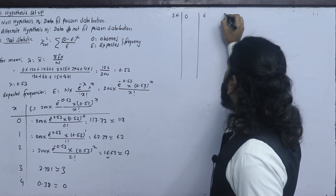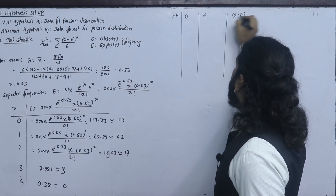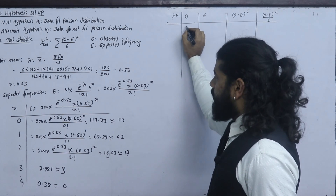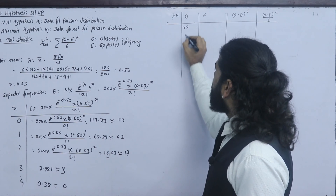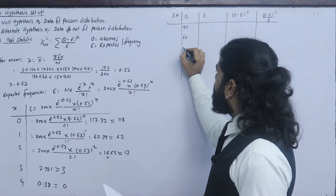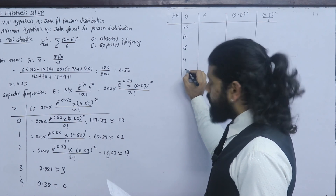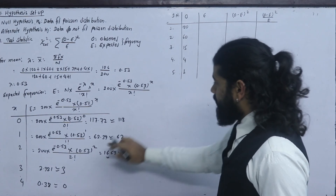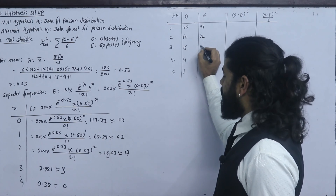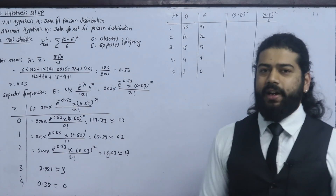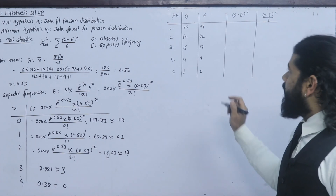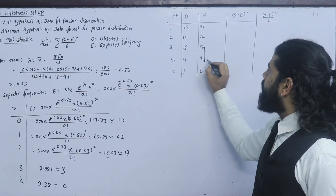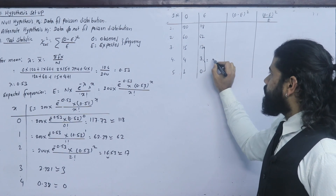Now we set up the chi-square table with observed frequency O and expected frequency E. The observed frequencies are: 120, 60, 15, 4, 1. The expected frequencies are: 118, 62, 17, 3. We merge the tail classes where expected frequency is less than 5.